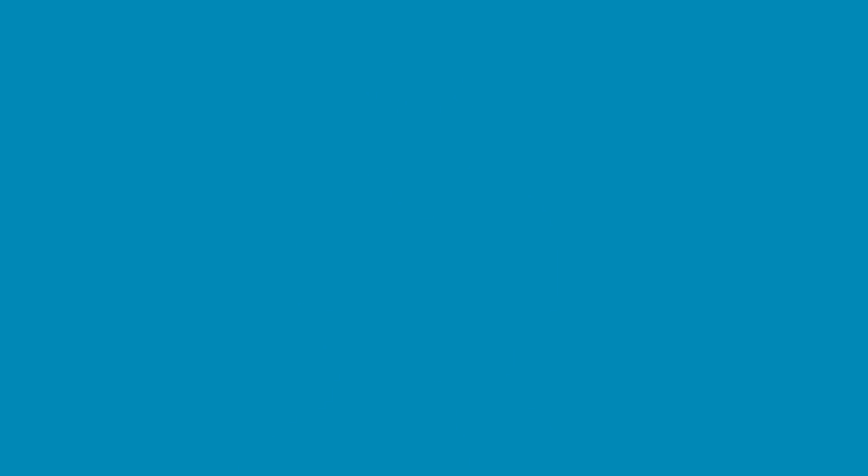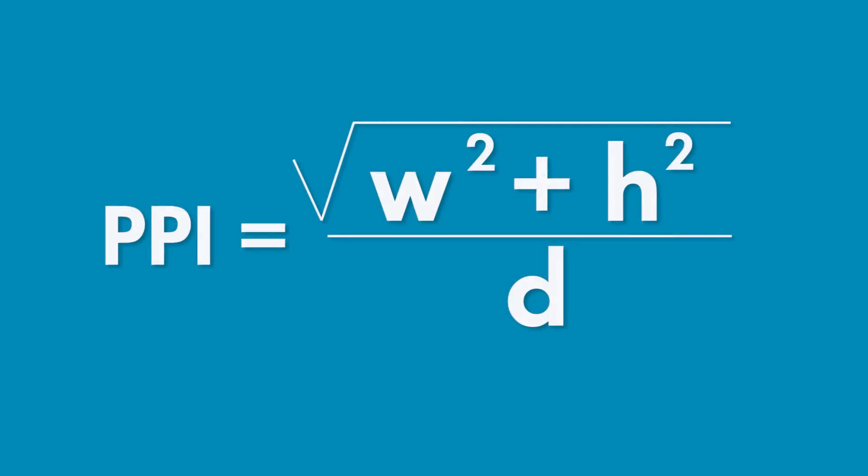PPI equals the root of the width squared plus the height squared, divided by the diagonal of the device. It's a variation of the Pythagorean theorem — a squared plus b squared equals c squared.